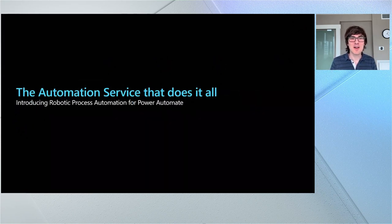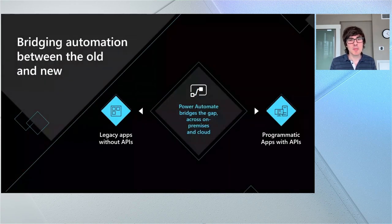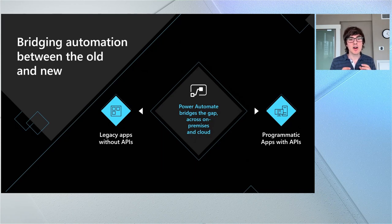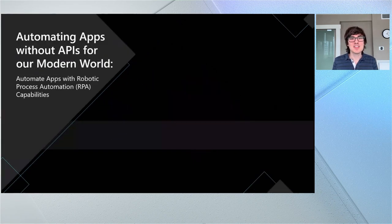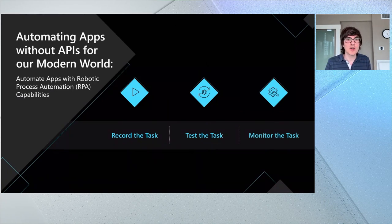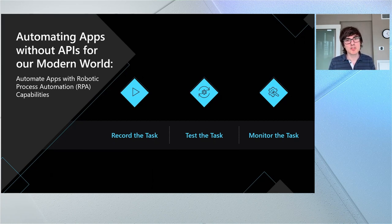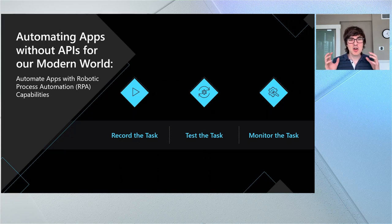One of the new things in Power Automate is robotic process automation, which has caused a lot of excitement in the industry over the past few years. RPA is about bridging from legacy systems to modern systems by automating the user interface of those legacy systems. This allows you to automate literally any type of application, because every application — if it doesn't have an API — is going to have some sort of a UI. With RPA, you record the tasks you want to perform, just like recording a VB macro. You record the task, test it, play it back, make sure it's behaving as expected, and then monitor and manage it.